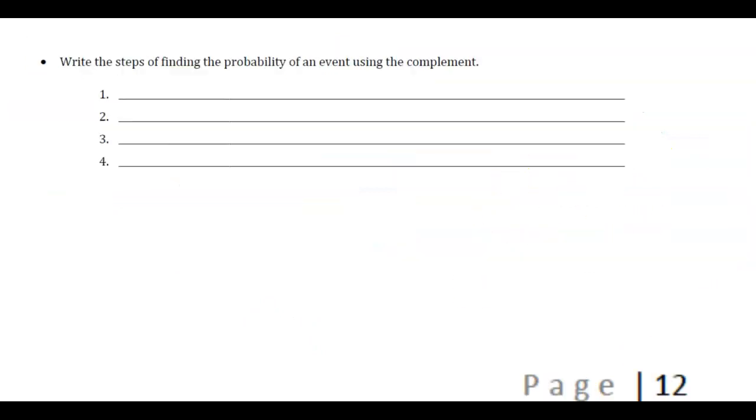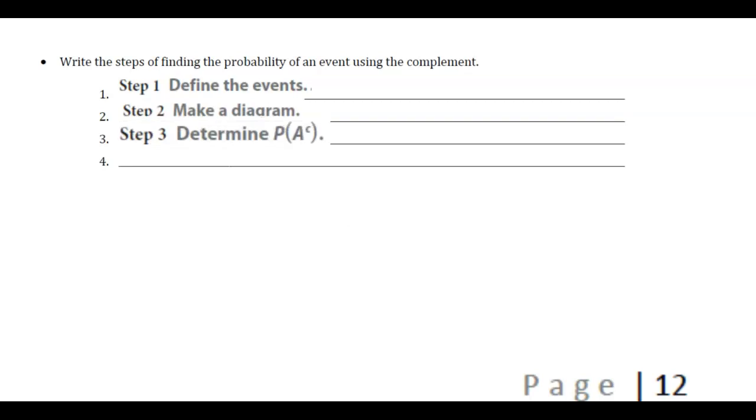And unpause. Hopefully you're moving on because we're going to go over the steps on how to find the complement. So step one, we're going to define the event what it is we're looking for. Step two, we're going to make a diagram, picture, chart, some sort. Step three, we're going to determine what is not the event. And we're going to determine what is the event. And here we go. By the way, if I'm going too fast, please pause.